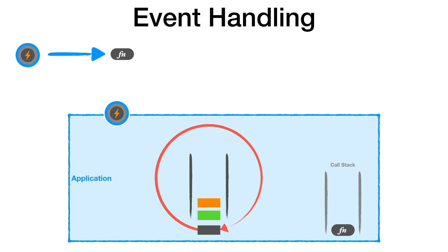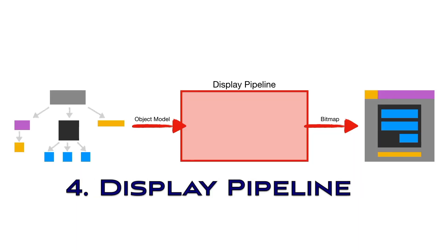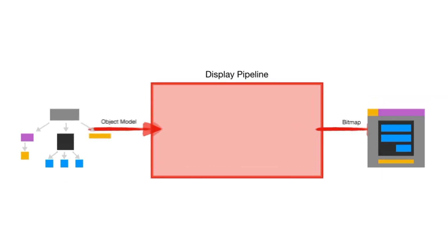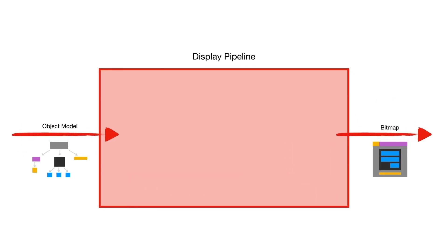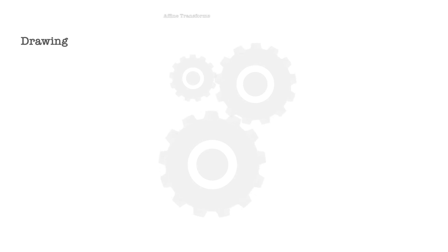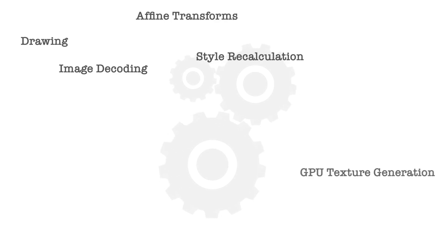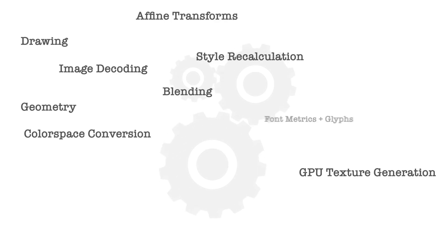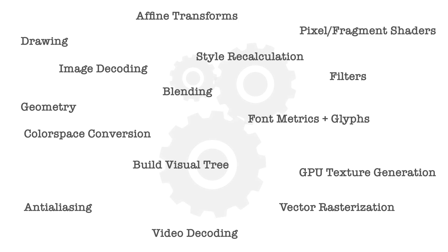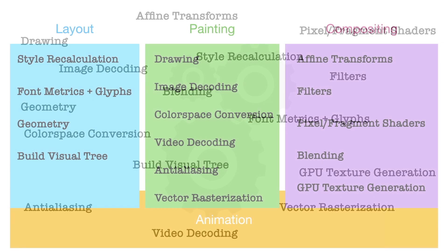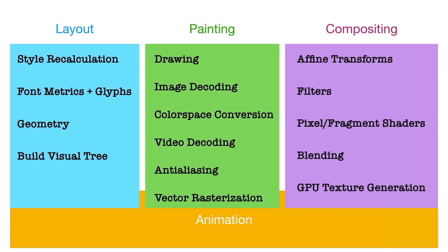And finally, the last topic we'll cover is the display pipeline — the process that takes your textual description of a UI and translates it to show pixels on the screen. There are lots of little activities happening inside, but they all can be grouped into three major areas: the layout, painting, and compositing.